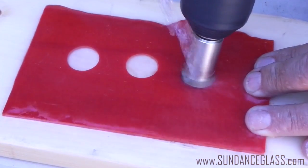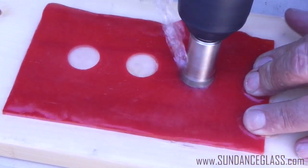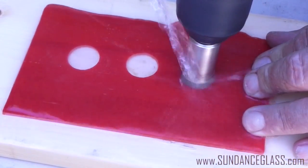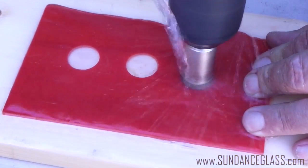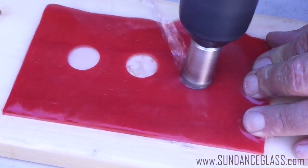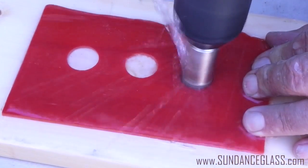You do not need to apply pressure. The weight of the drill is sufficient. Use full speed and let the drill bit do the work for you. You will feel the bit break through the back of the glass once the hole is completed.